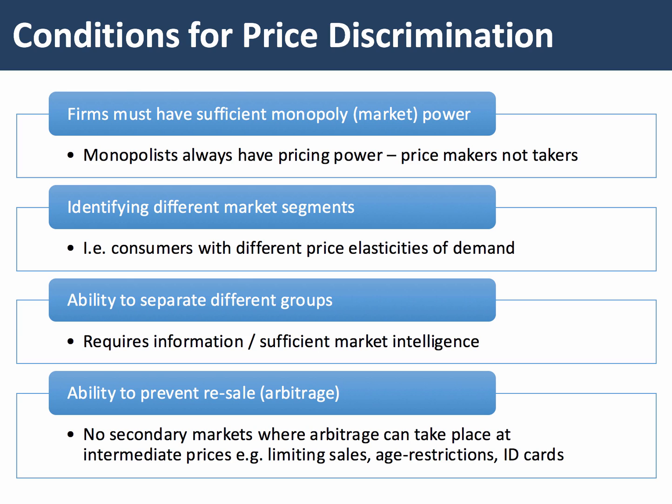We see price discrimination often in markets — it's very common — but what are the conditions required for firms to be able to do this? The first is that we don't see price discrimination in a perfectly competitive market, because in that market structure firms are passive price takers instead of price makers. Monopolies have pricing power, and indeed any firm in imperfect competition can engage in some shape or form in price discrimination. The key is to have a downward sloping demand curve, to have some pricing power.